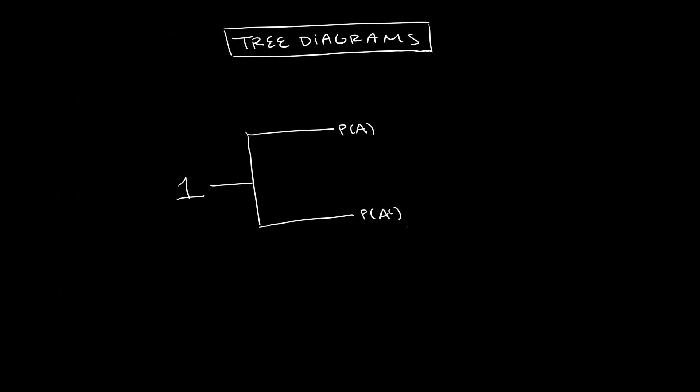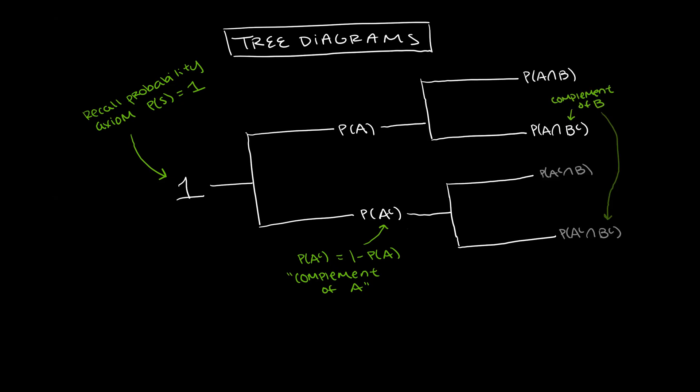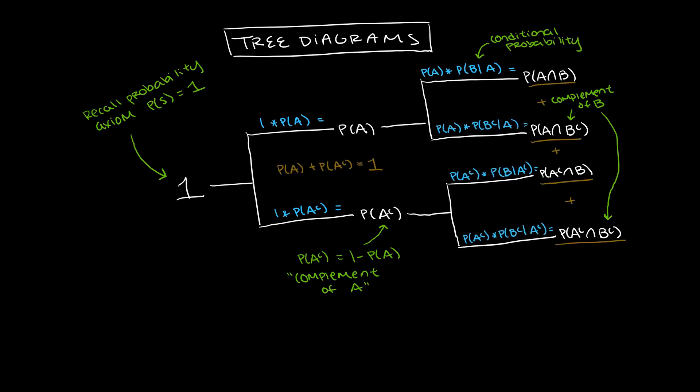Here's how tree diagrams work. Multiply along the branches from left to right. Add down the columns, top to bottom. A good check is that the probabilities added in a column will sum to 1. Can you think about why they do that?